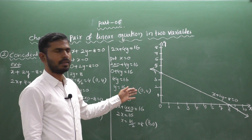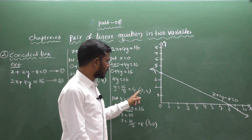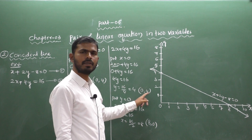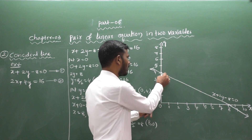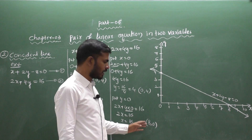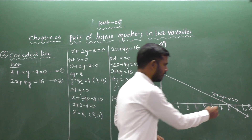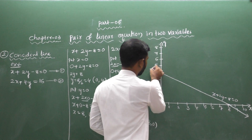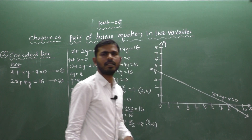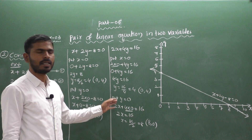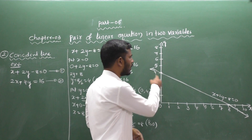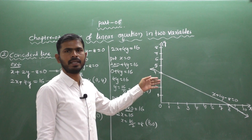We plot these on graph paper: (0, 4) and (8, 0) — the same points as the first equation. This means the graph of the first equation and the graph of the second equation overlap each other, so they are coincident lines.